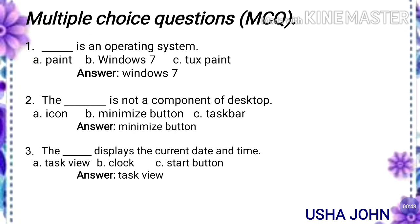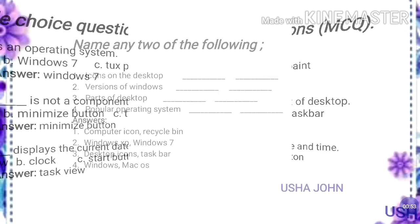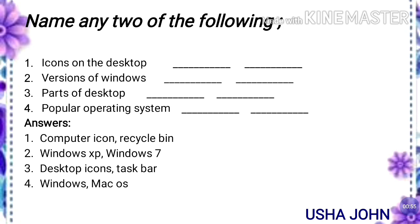Task view displays the current date and time. Second section: name any two of the following icons on the desktop. Answers are: computer icon, recycle bin. Second one: versions of Windows — answer: Windows XP, Windows 7.